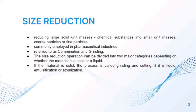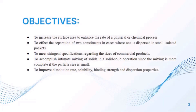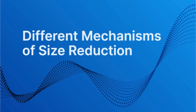If the material is solid, the process is called grinding and cutting; if liquid, emulsification and atomization. The objectives of size reduction are: first, to increase the surface area to enhance the rate of a physical or chemical process; second, to affect the separation of two constituents; third, to meet stringent specifications regarding product sizes; fourth, to accomplish intimate mixing of solids; and lastly, to improve dissolution rate, solubility, binding strength, and dispersion properties.